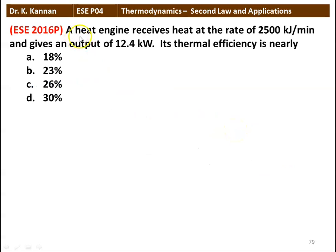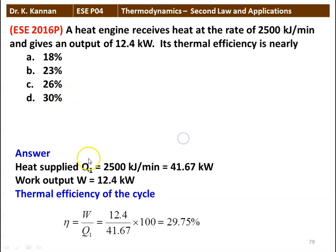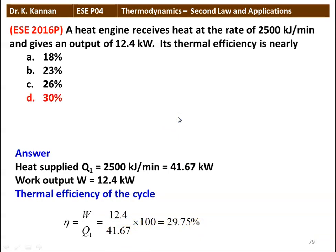Next question: a heat engine receives heat at the rate of 2500 kilojoules per minute and gives an output of 12.4 kilowatt. Its thermal efficiency is nearly: 18%, 23%, 26%, or 30%. The answer: heat supplied = 2500 kJ/min = 41.67 kilowatt. Work output W = 12.4 kilowatt. Thermal efficiency η = W / Q = 12.4 / 41.67 × 100 = 29.75%. So the answer is 30%.